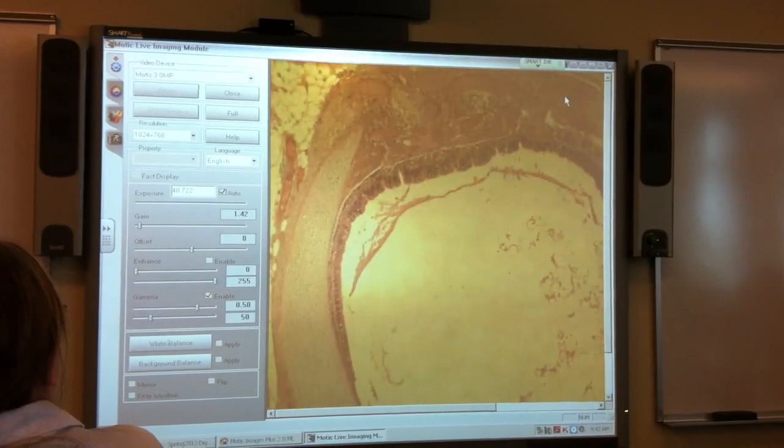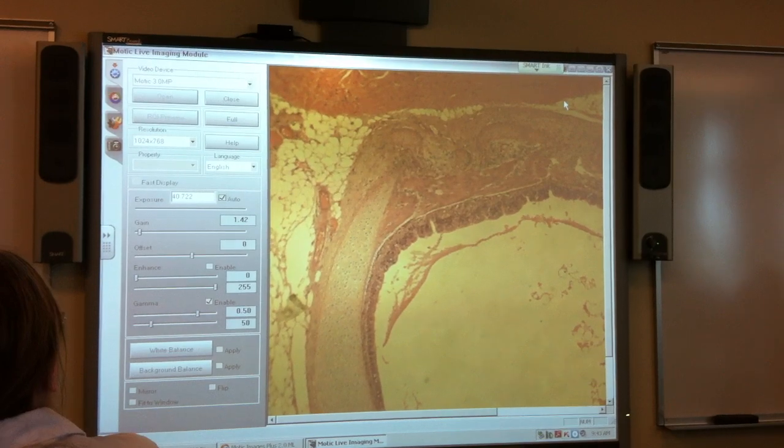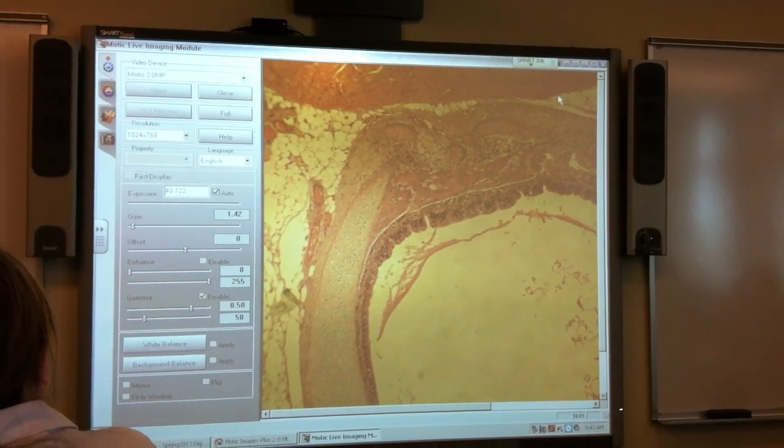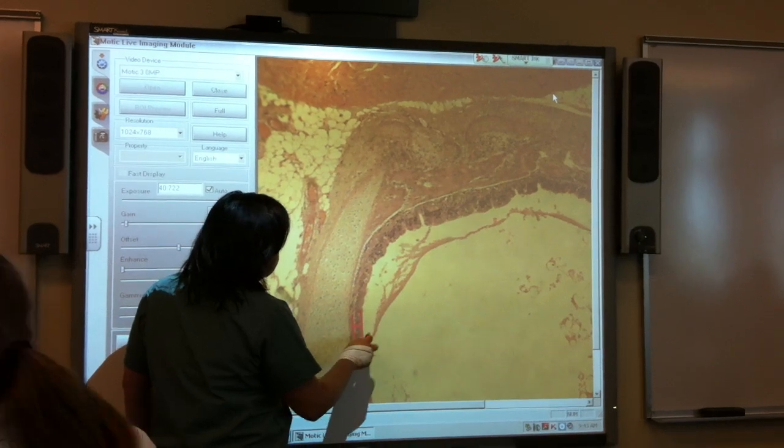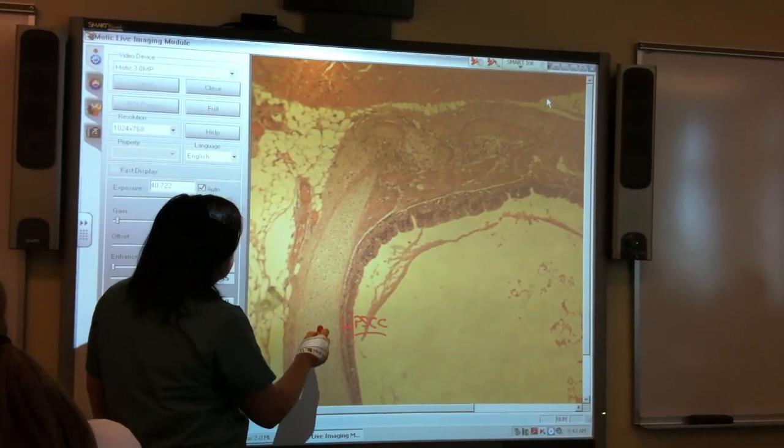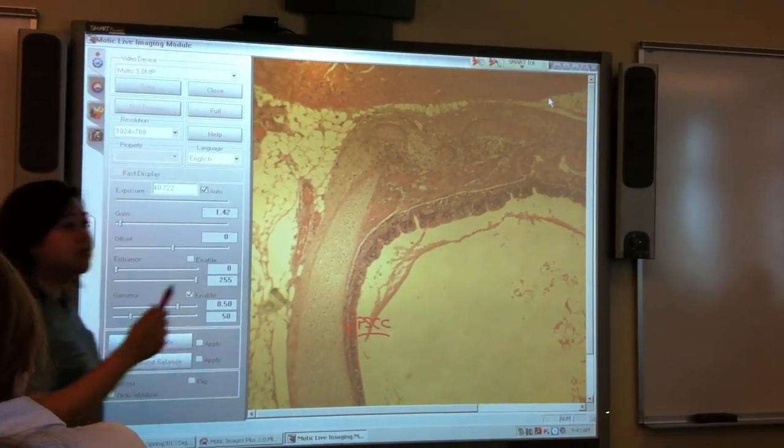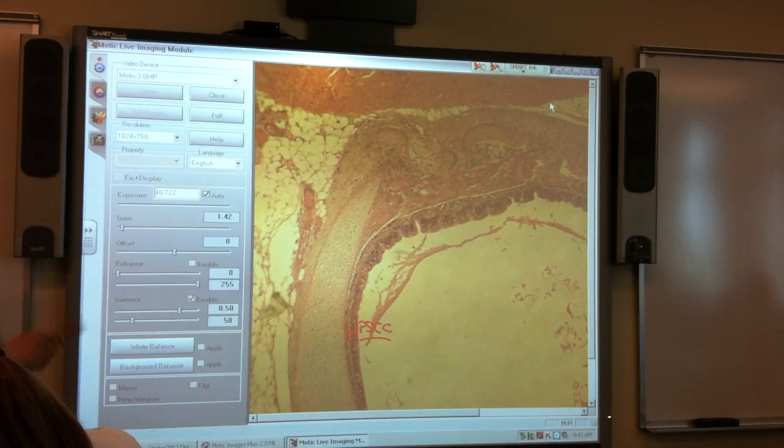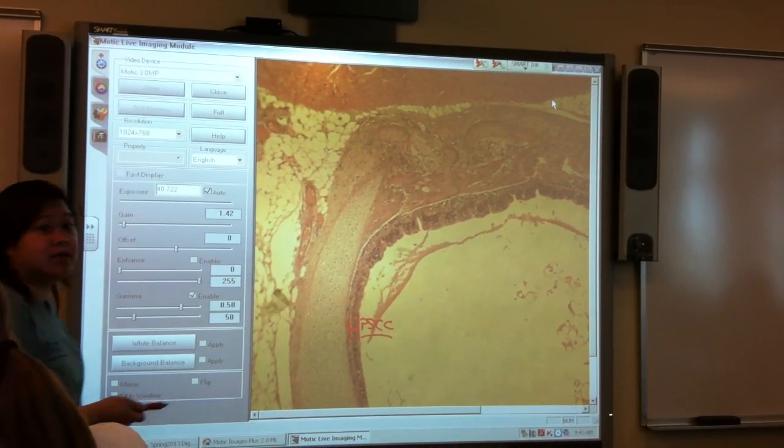And then this one. Trachea. Cell type. What do you call the cell type here? Pseudostratified. Pseudostratified ciliated columnar. That's respiratory epithelium. That is, but you have to call it, if it's asking for cell type. Yeah, no, I was just asking. Yeah, it's layer-wise, it's respiratory epithelium. Cell type is pseudostratified ciliated columnar cells.